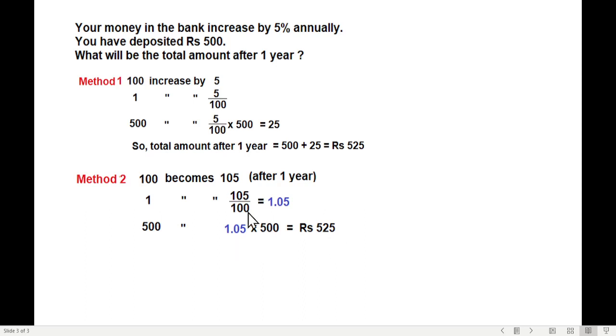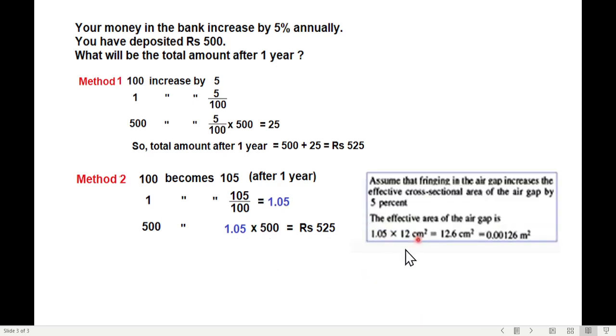For 5% increase, I am multiplying it by 1.05, this 1.05 as shown here. The original area is 12, we have 5% increase, so multiplying it by 1.05 to get the total area, 12.6 centimeter square, which can be converted into meter square by dividing by 10,000.